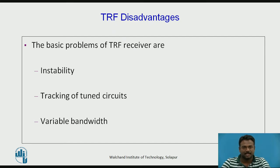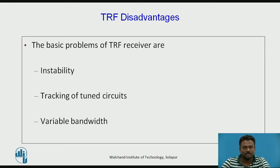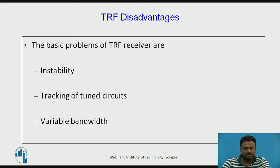The basic problems of TRF receivers are: instability, tracking of tuned circuit, and variable bandwidth. In the TRF receiver, the RF amplifier stages and the detector circuit are connected to a common knob through mechanical gang tuning. The variable capacitance values in all stages must be equal, which is not the case, so the resonant frequency differs from one stage to another — that is the instability. Tracking refers to the multiple amplifier stages amplifying a common frequency, causing unavoidable positive feedback. Variable bandwidth means the bandwidth changes as the selected frequency changes across the band.